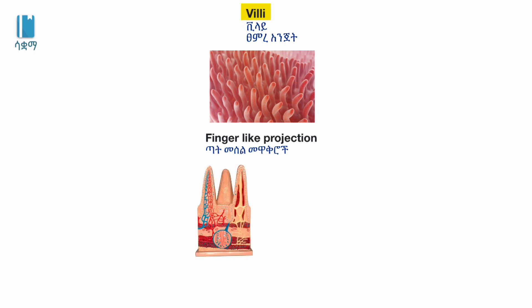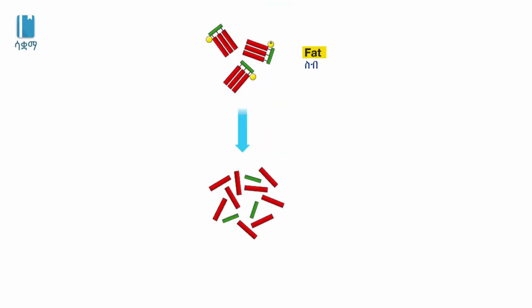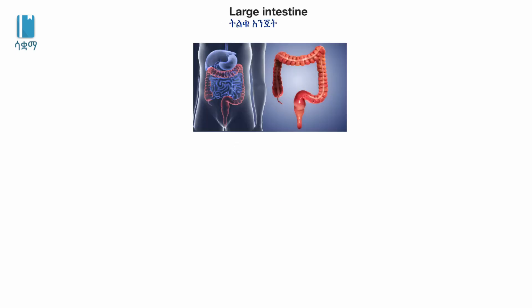The digestive system uses blood vessels for absorption. The protein breaks down into amino acids as the end product. The fat breaks down into glycerol. The end products are absorbed in the small intestine, and the large intestine handles further processing, including absorption of calcium.